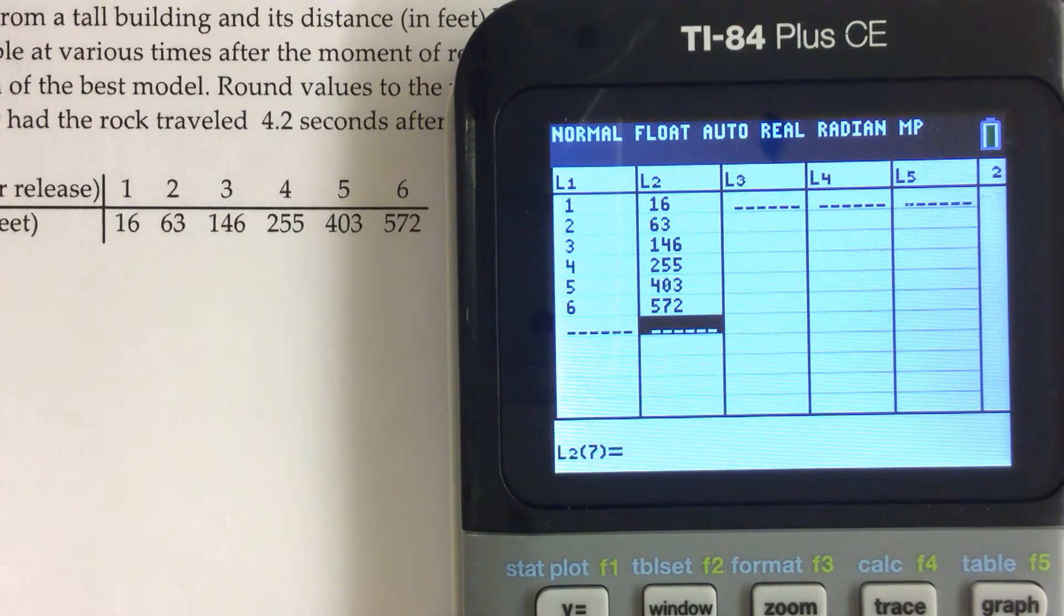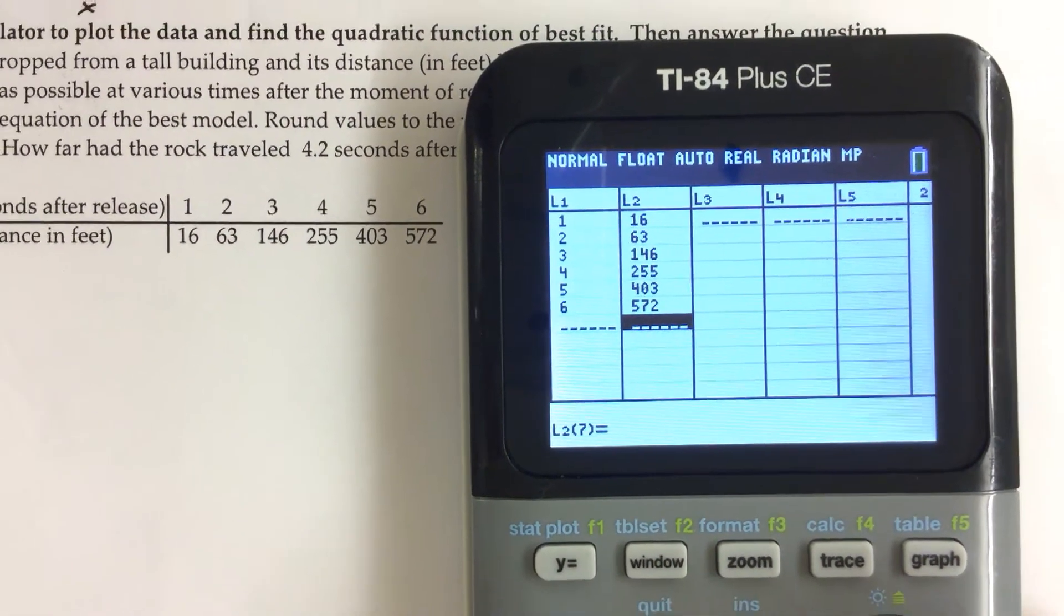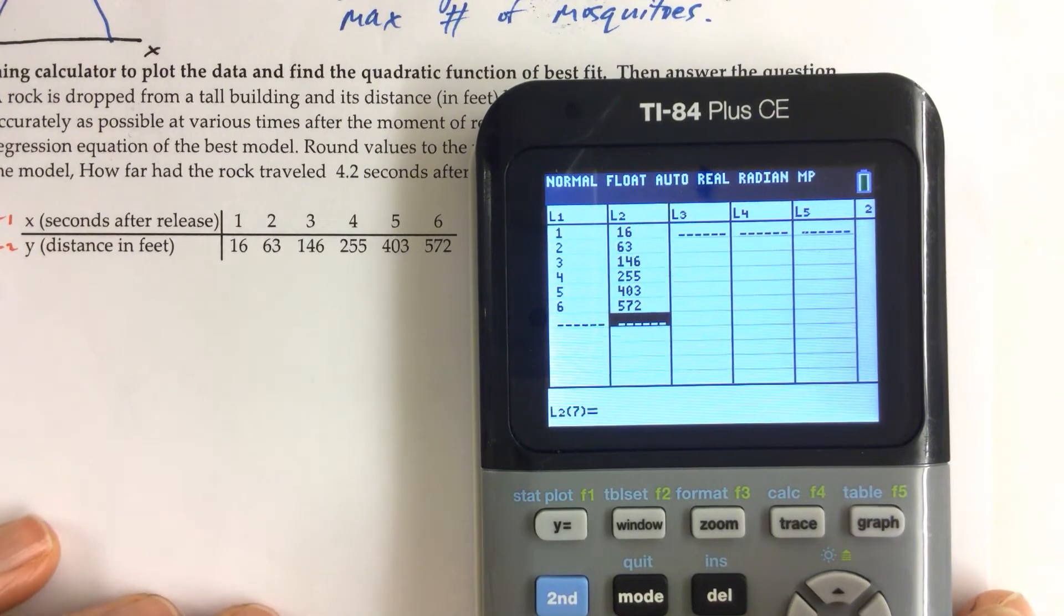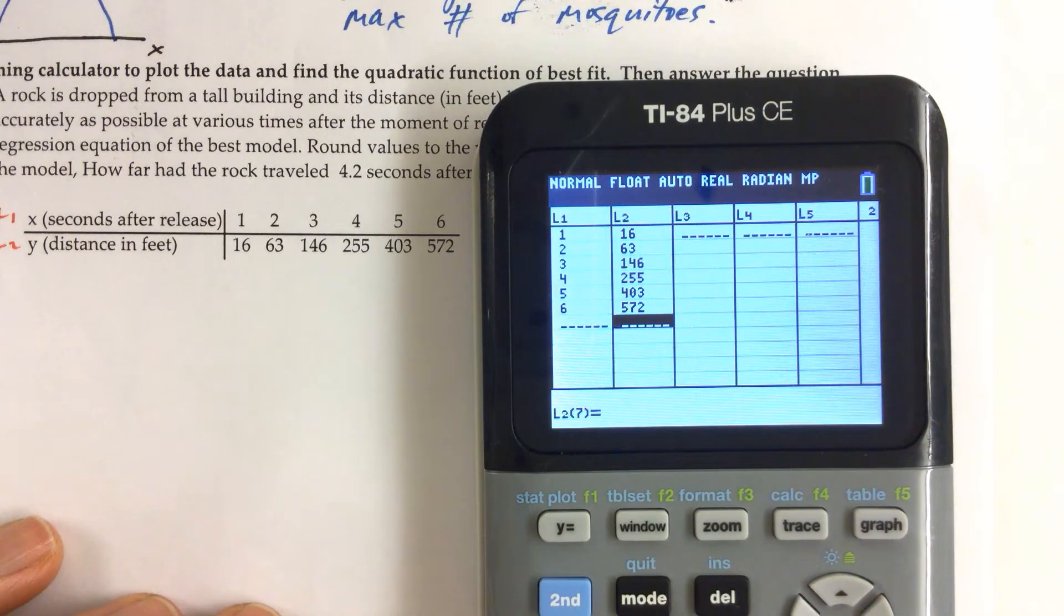And now I've got both of my lists look good, just double checking the numbers. Once I do that, I want to calculate. Well, first of all, let's go ahead and take a look at what the numbers look like or what the scatter plot would look like.